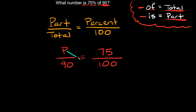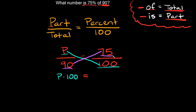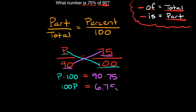Now that we have our proportion set up, we can solve using cross multiplication — I draw a cross and those are the numbers I multiply together. So I'm going to multiply P times 100, and set that equal to my other cross: 90 times 75. Simplifying: P times 100 is just 100P, and that's equal to 90 times 75, which equals 6,750.